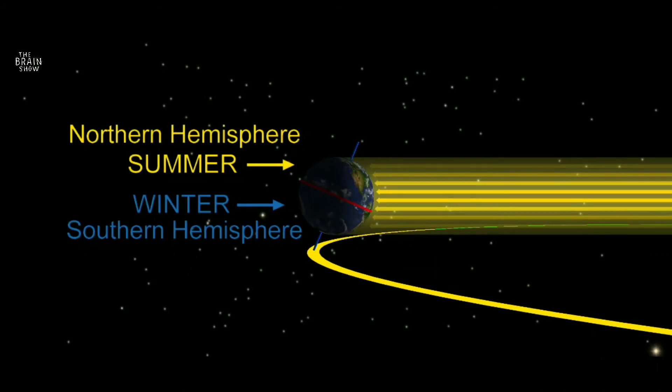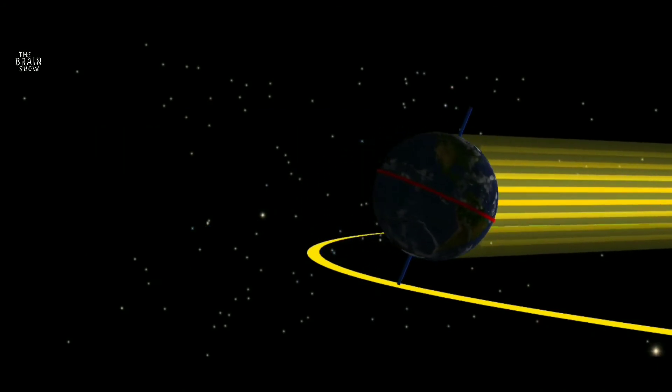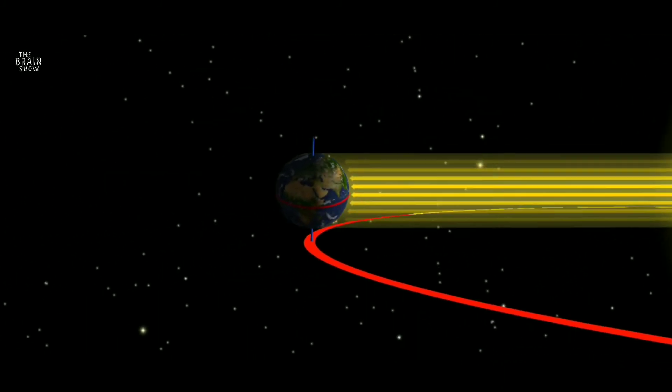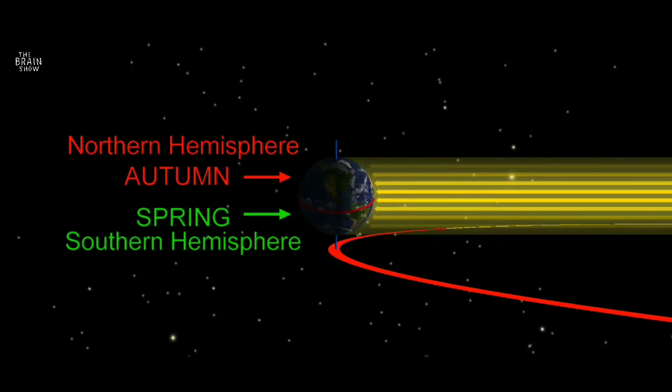When the Sun's energy heats the Northern Hemisphere most directly, it's summertime. September 22nd or 23rd is the autumnal equinox.